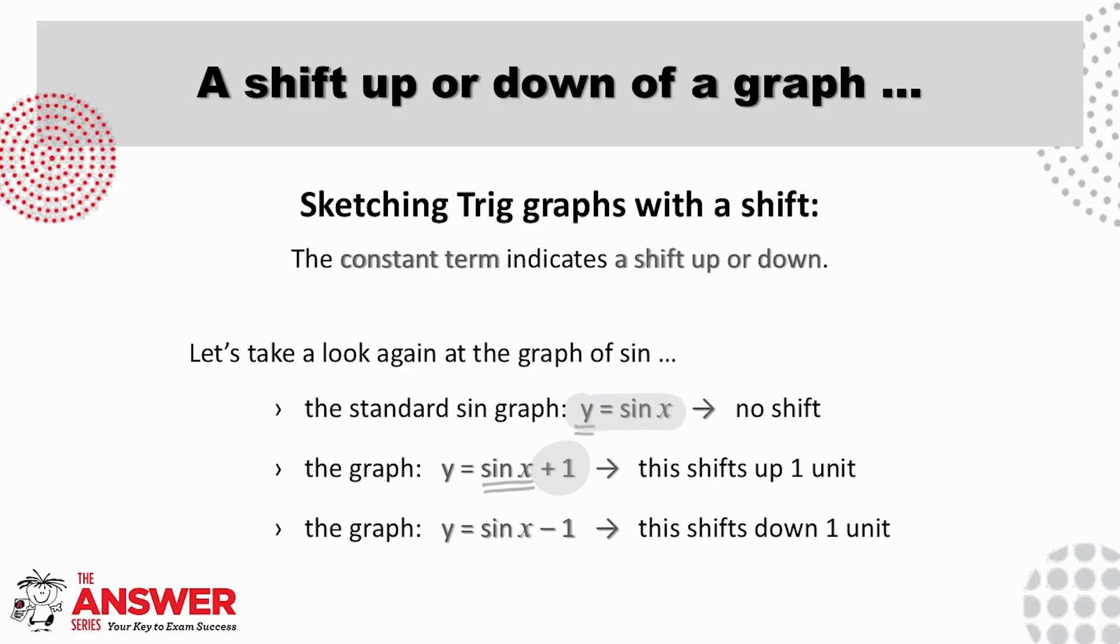What is essentially happening here is that each of these y values increase by one unit. In the same way, if we subtract one from the standard graph, each of these y values decreases by one unit. We can know therefore that the constant term indicates that there is an up and down shift and by how much.